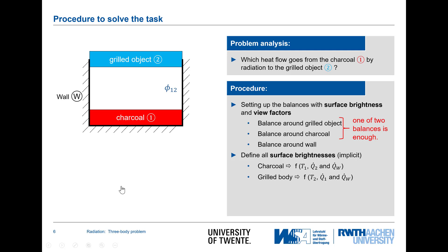The grill body depends on its own temperature and the surface brightnesses of the other objects. The wall temperature is not known — that's why I marked it in red. I assume I know the temperatures of the charcoal and the grilled object, but the wall temperature is unknown. I need to define all the view factors and then I can solve it.